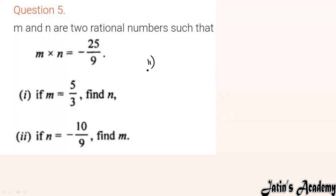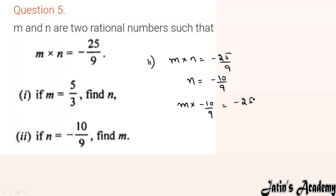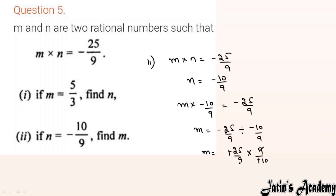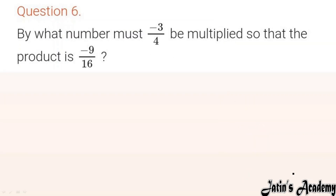Part (ii): n = minus 10/9, find m. Use the same statement: m × (minus 10/9) = minus 25/9. Move minus 10/9 to divide: m = minus 25/9 ÷ (minus 10/9). Divide converts to multiply, take reciprocal. Minus cancels minus, 9 cancels 9, then cancel with 5's table. Answer: m = 5/2.